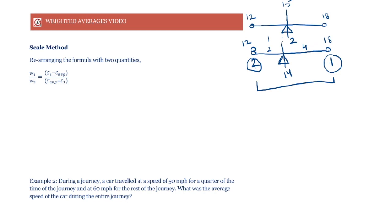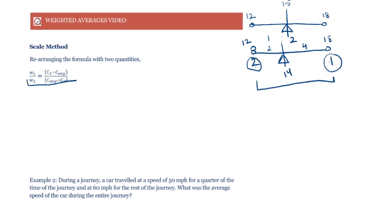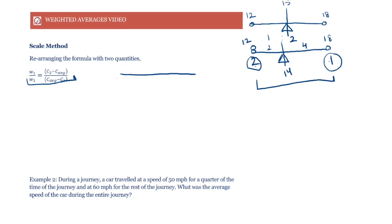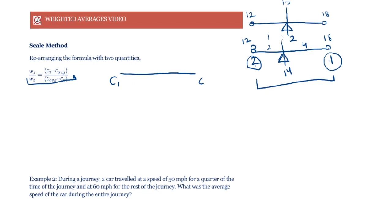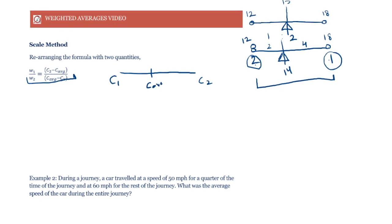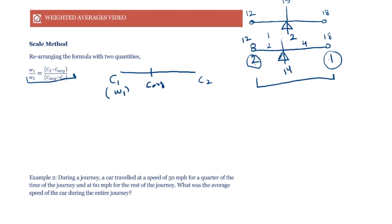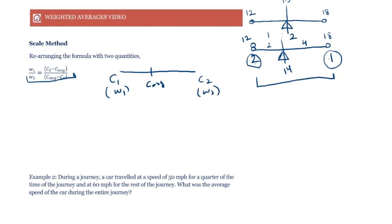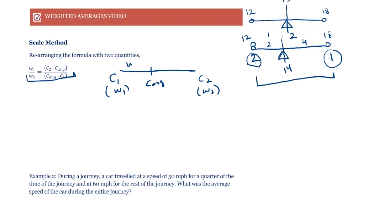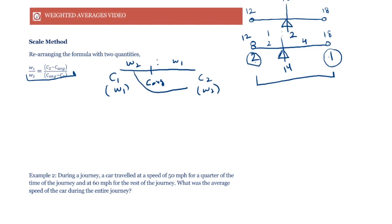This is pretty much what the scale method is. Let's draw the seesaw. We say this is c1, this is c2 at the two extremes, and somewhere here is our c average. If weight of c1 is w1 and weight of c2 is w2, then this distance gets split in the ratio w2 is to w1. Note that this is the inverse ratio.